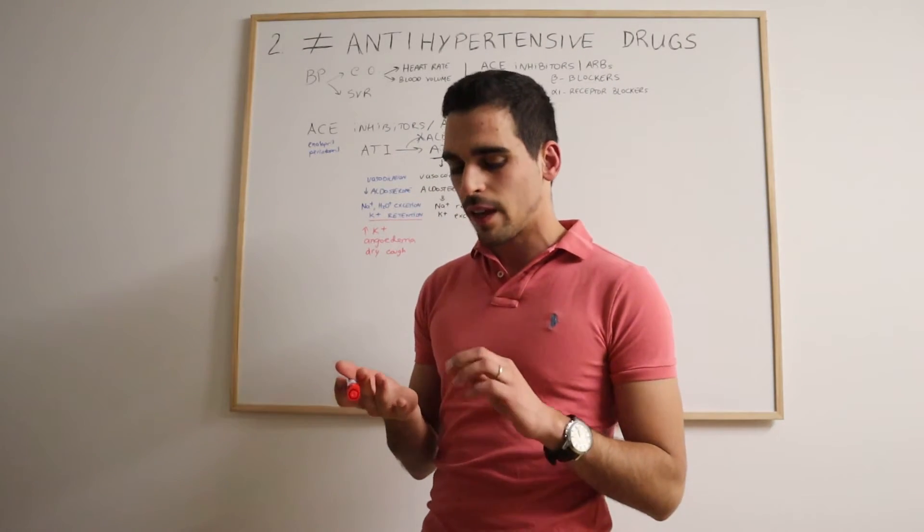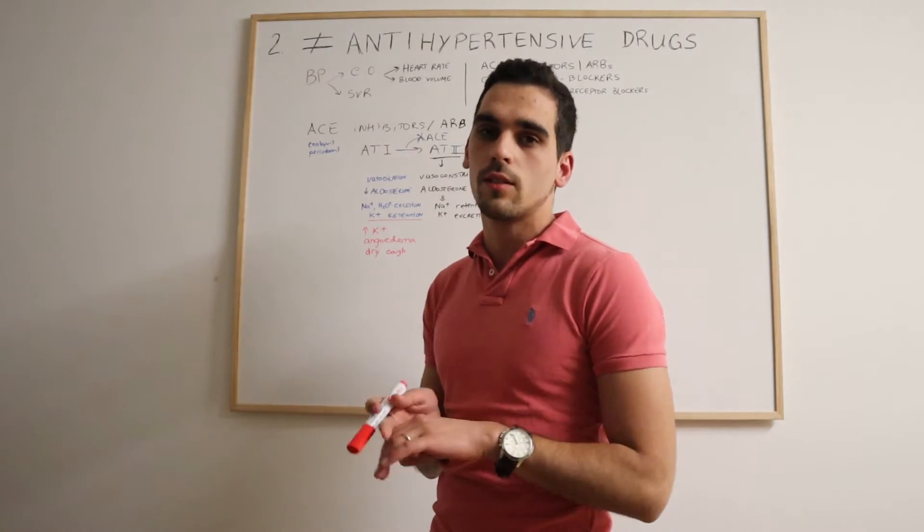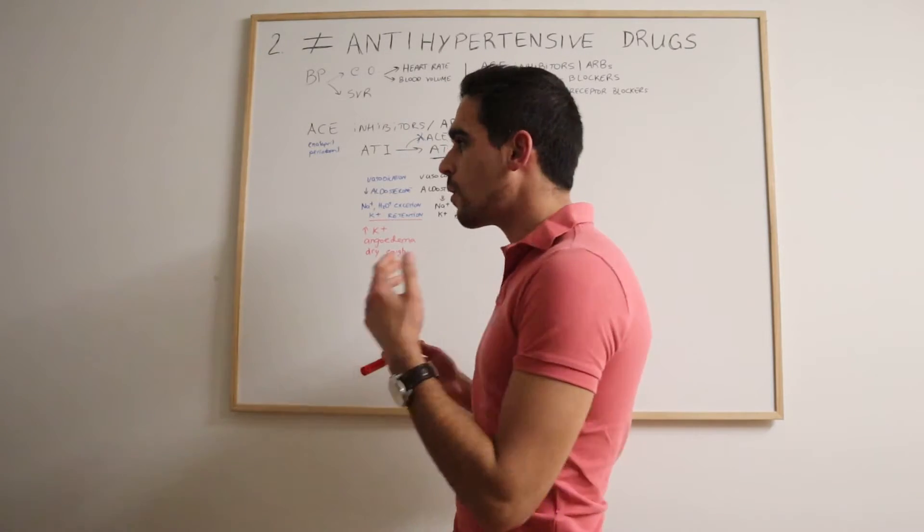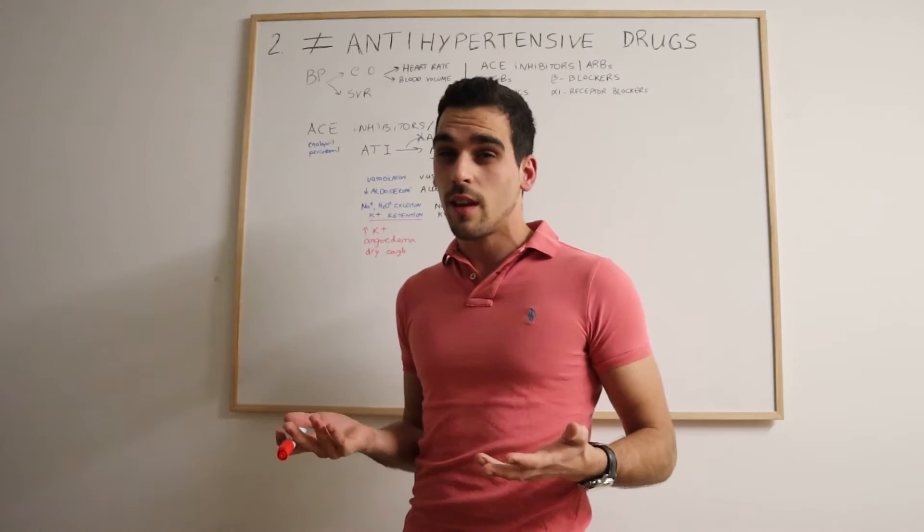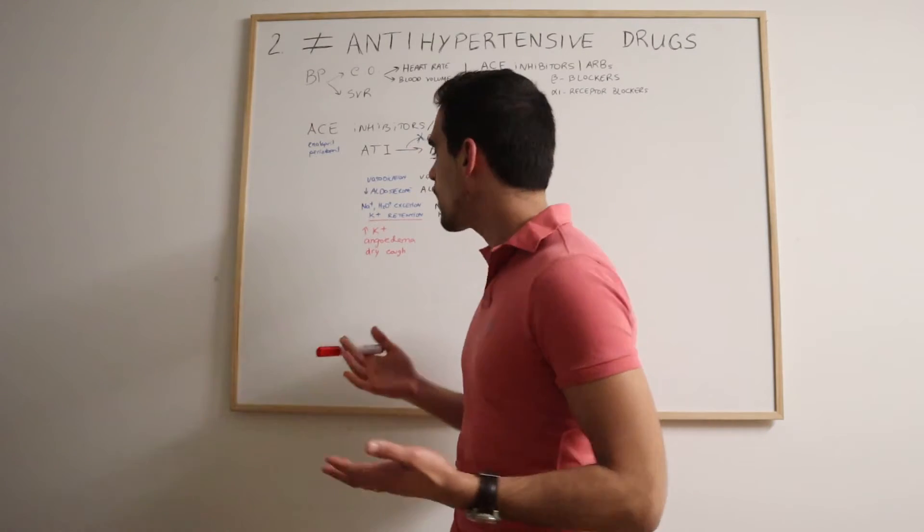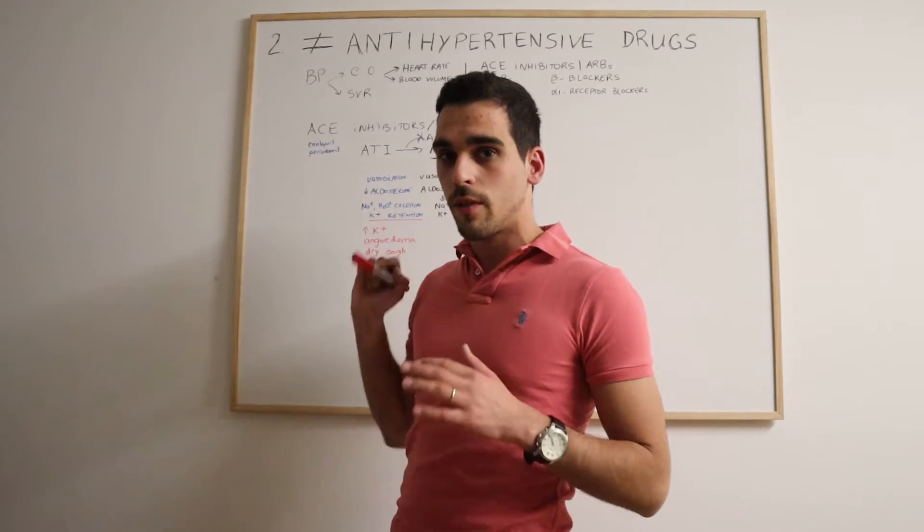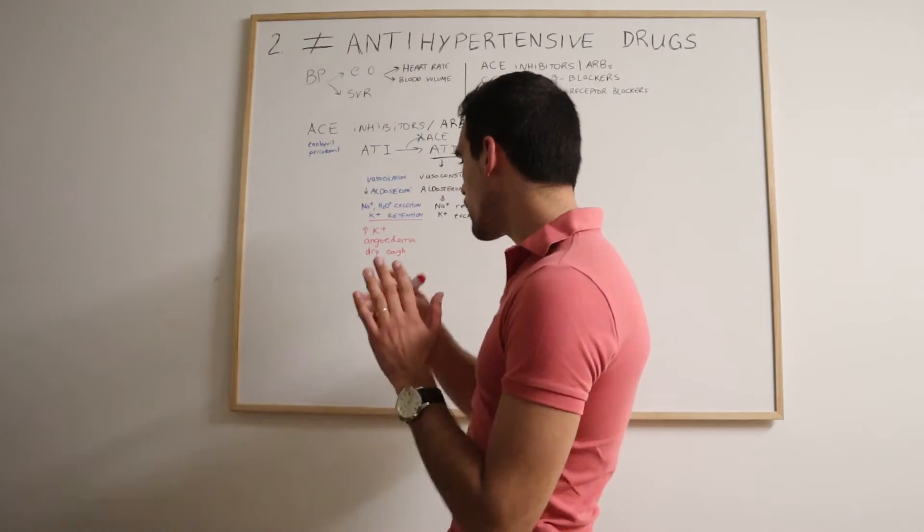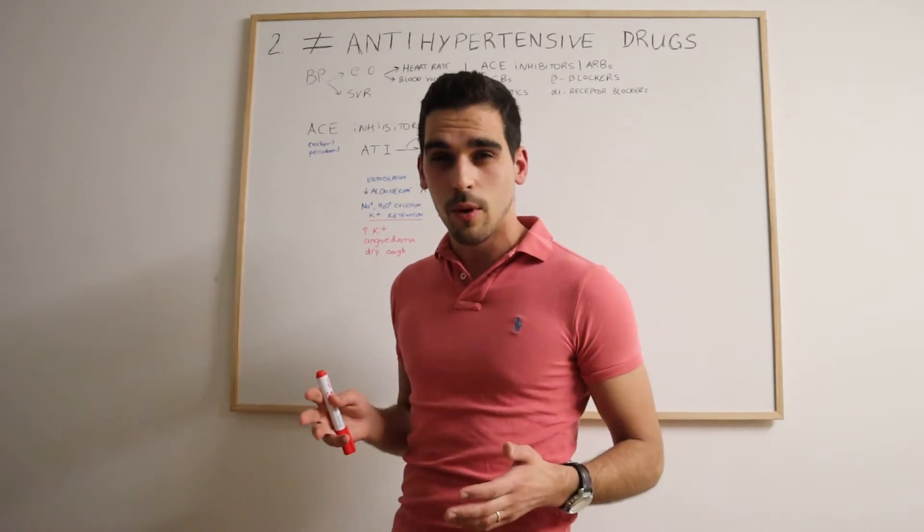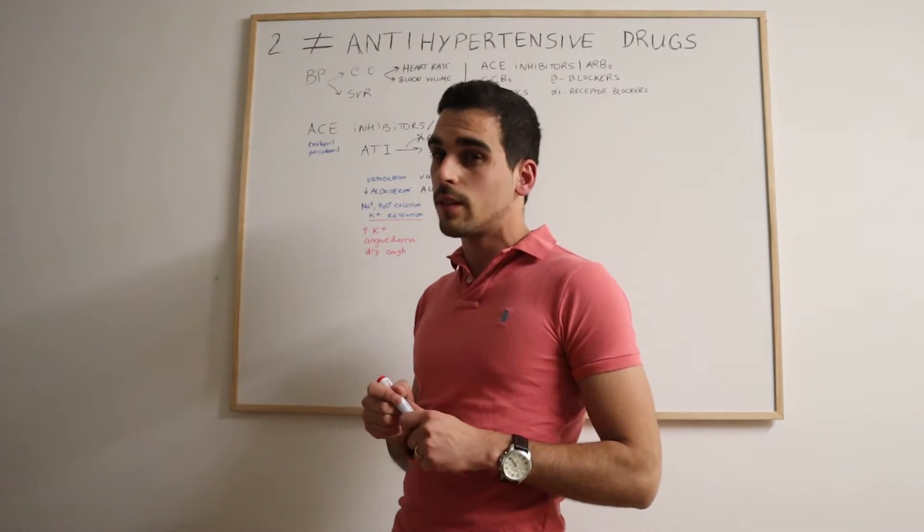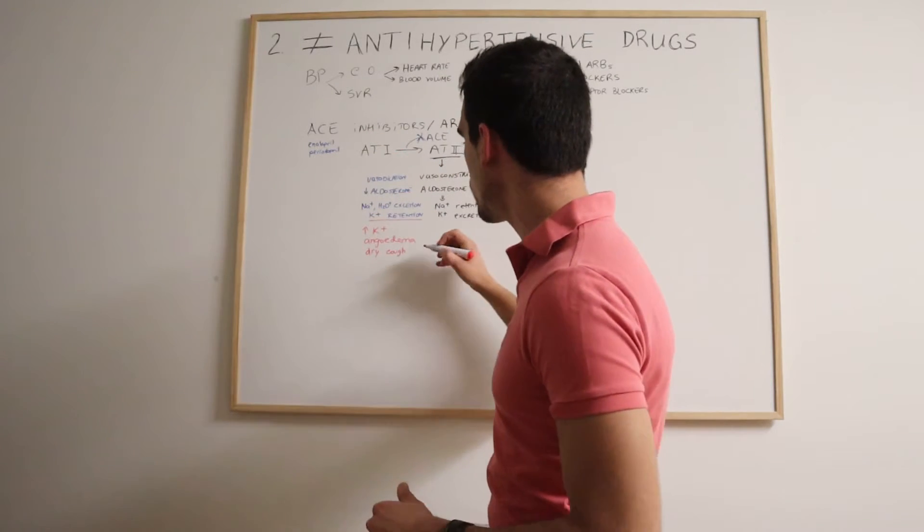Bradykinin is like a bronchoconstrictor and it's also a vasodilator. Because it's a vasodilator and it's accumulated, sometimes it's thought to help as well with the antihypertensive properties of the ACE inhibitors. But when that's a problem, and normally that's a problem in up to 20% of the patients taking ACE inhibitors,